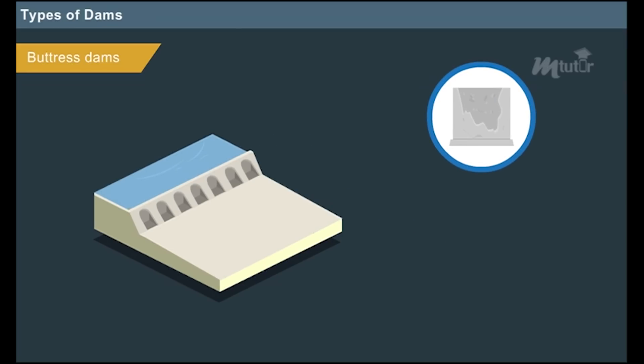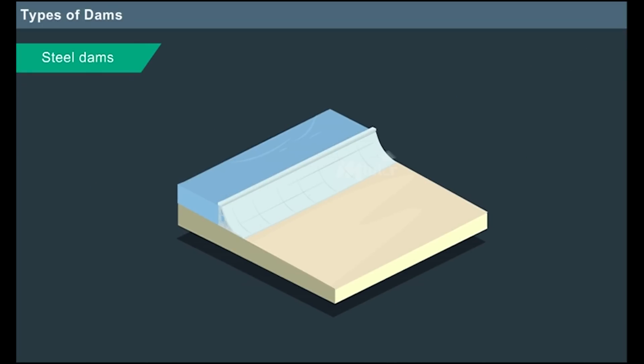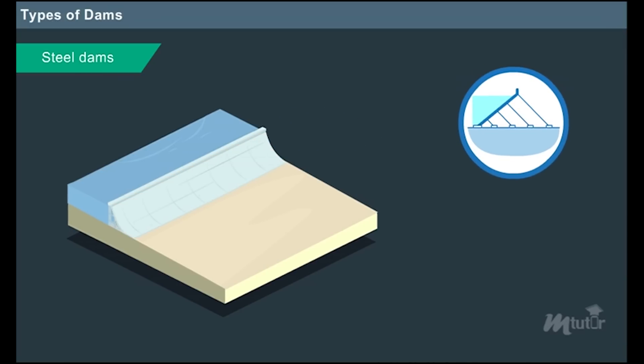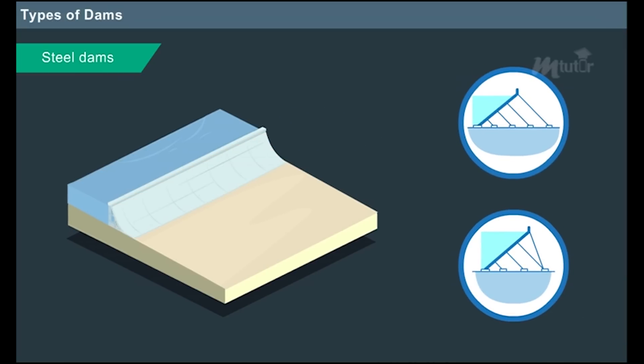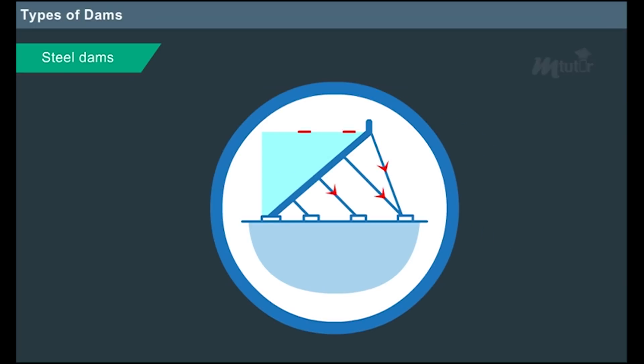Steel dams: These are constructed with framework of steel plating particularly on the upstream side. Generally, a steel dam is curved in shape and supported by struts. They are further classified as direct strutted and cantilever type. In case of direct strutted type, the water loads are transferred to the foundation by means of inclined struts. In case of cantilever type, the section of the dam is in the shape of cantilever truss which introduces a tensile force on the dam girder.